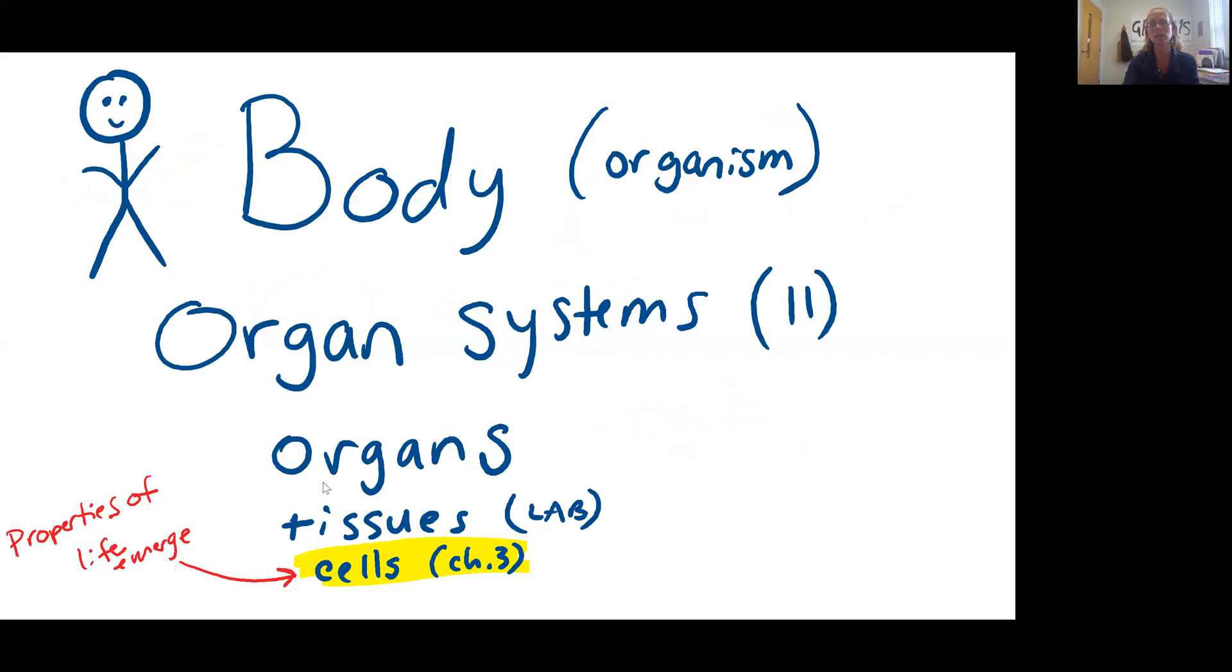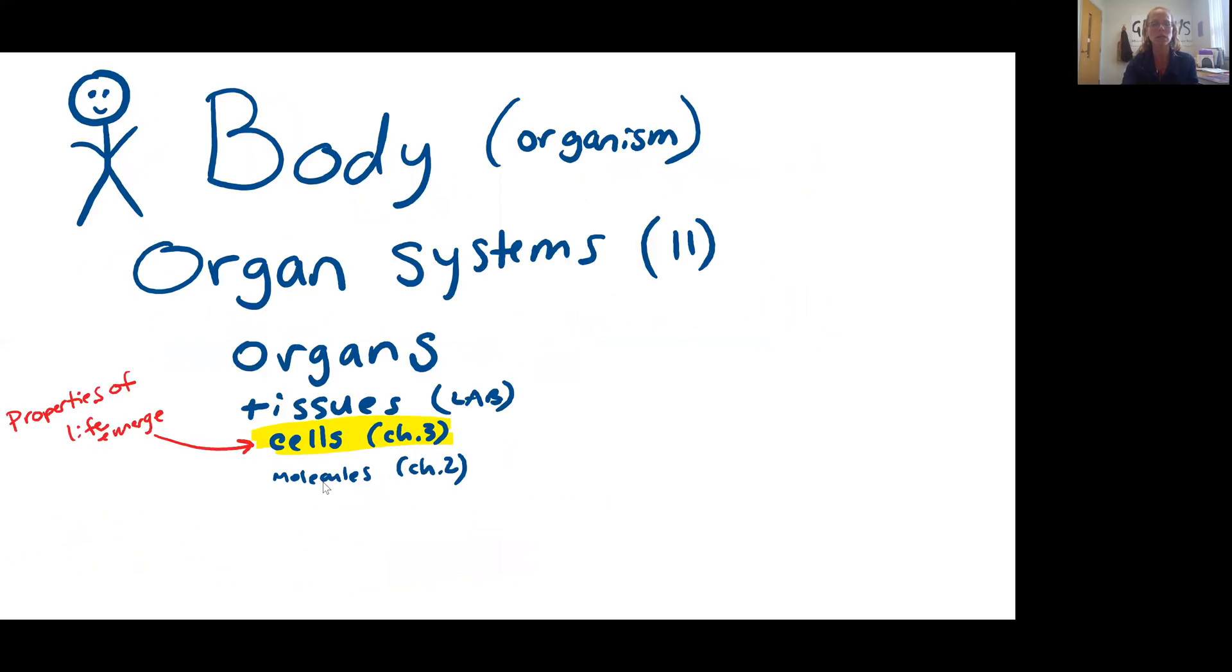Those tissues are collections of cells that are working together for those specific functions. Cells are important because this is where we start to see the properties of life emerging. This is the smallest functional unit of your body, the smallest living functional unit of your body is the cell. We're going to spend Chapter 3 pretty much just talking about the cell. As we look at each of our body systems, we'll start by talking about what is the cell that's making up this organ, these tissues, and so forth. We will constantly be referring back to the cells that are making up each of those body systems. Those cells are composed of special molecules. So we do need to have a little bit of a chemistry discussion in this course. We'll be doing that with our next chapter, Chapter 2.